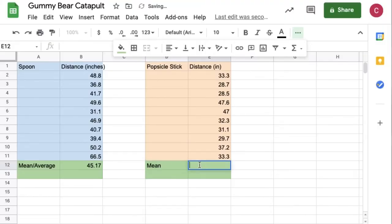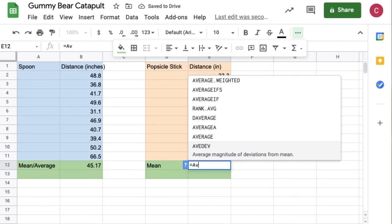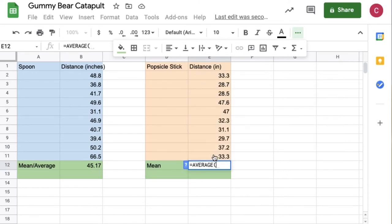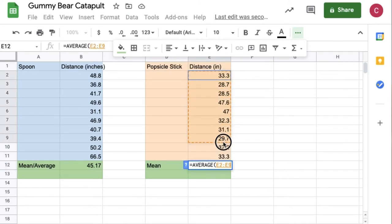Now our computer can actually do this in just one step so let's learn how that's done with the second catapult. Type equals average parenthesis and then highlight the numbers you want to find the average of and then hit enter and you're done. It adds them up and divides by how many there are just like we were doing the first time but this time it does it all in one step.